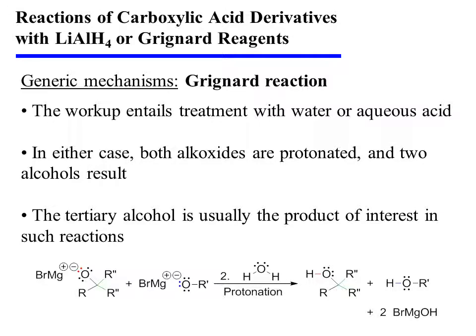This tetrahedral intermediate simply persists until the reaction is worked up. The workup entails treatment with water or aqueous acid, and in either case both alkoxides are protonated, and two alcohols result. The tertiary alcohol is usually the product of interest in such reactions.